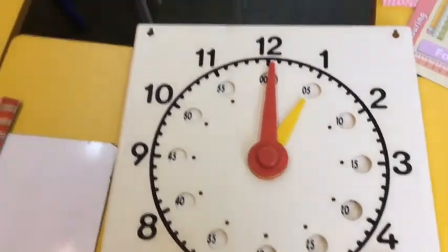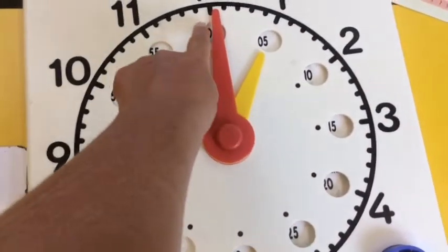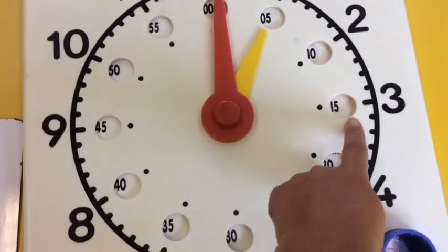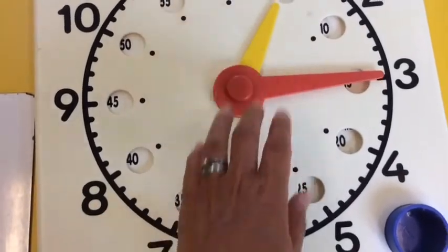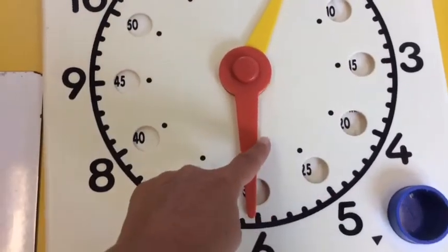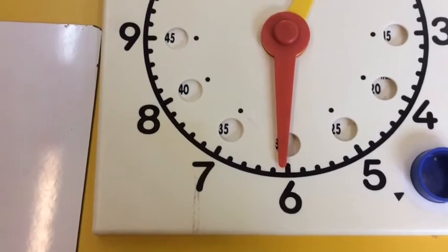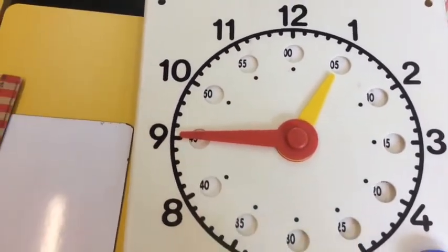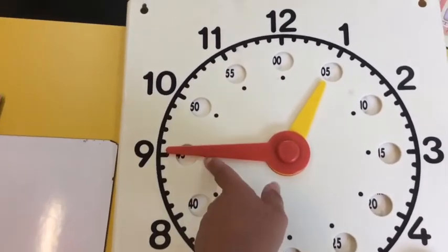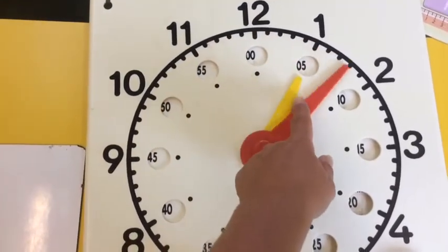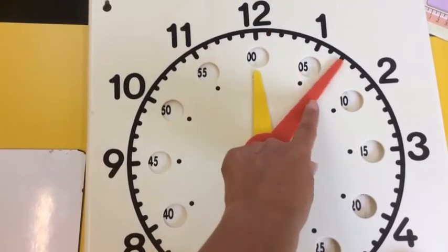What about times though, when the minute hand isn't at the 12, it's not o'clock, it's not pointing to the 3, so it's not quarter past something. It's not pointing to the 6, so it's not half past something. And it's not pointing to the 9, it's not quarter to something.